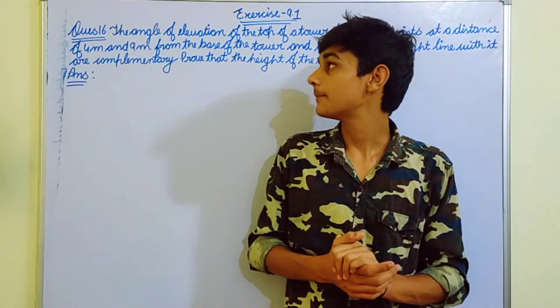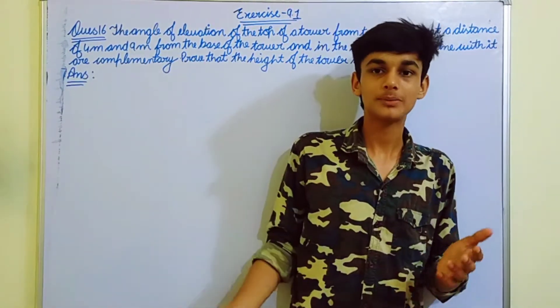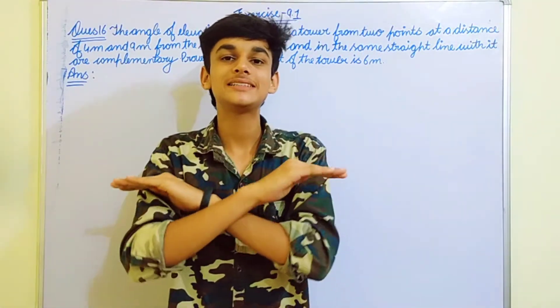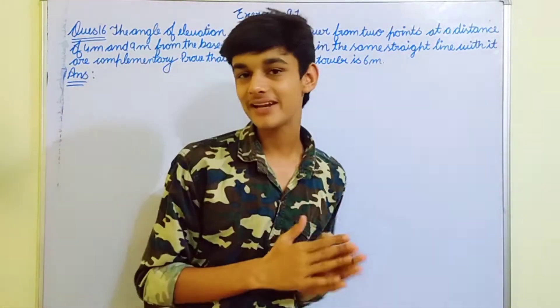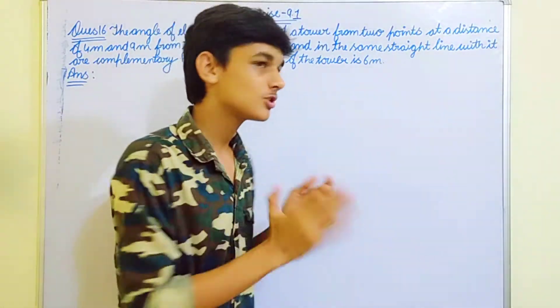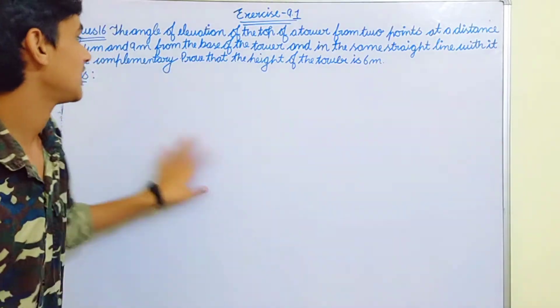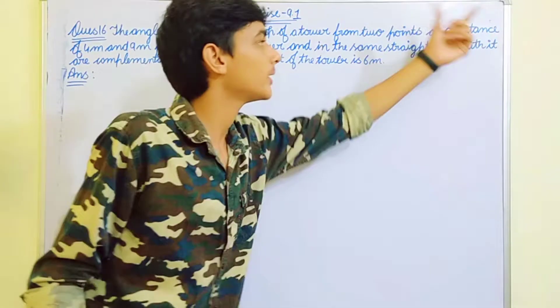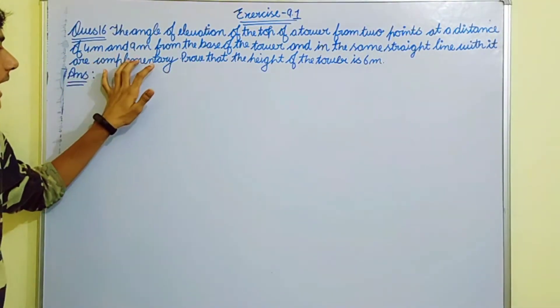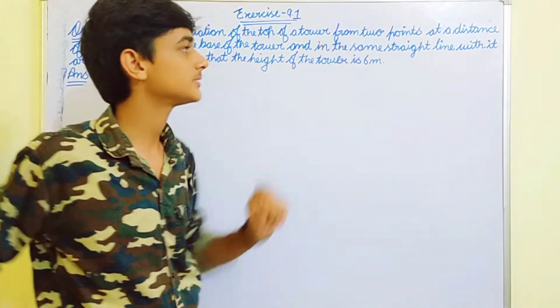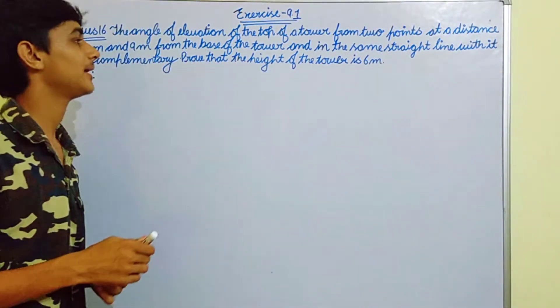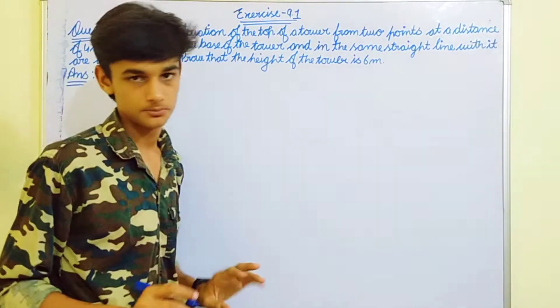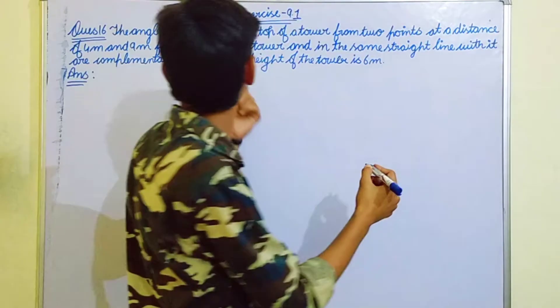We are going to solve question number 16 of exercise 9.1. This chapter 9 series complete, so I am very much excited about this. The angle of elevation of the top of a tower from two points at a distance of four meter and nine meter from the base of the tower and in the same straight line with it are complementary.